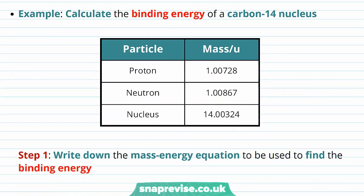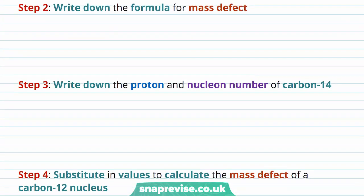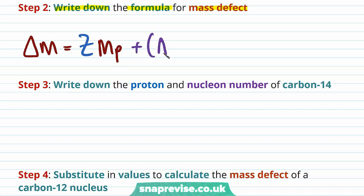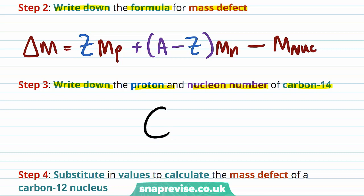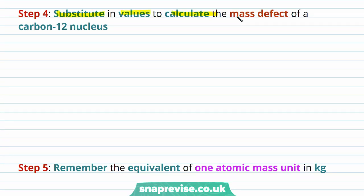Let's do an example of calculating the binding energy of a carbon-14 nucleus, using given masses of particular particles in atomic mass units. Step 1: write down the mass-energy equation — binding energy E = Δm·c². Step 2: write down the formula for mass defect — Δm = Z·m_p + (A − Z)·m_n − m_nucleus. Step 3: the proton number of carbon-14 is 6 and the nucleon number is 14.